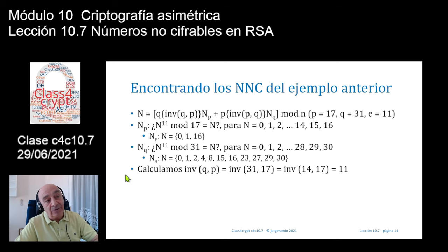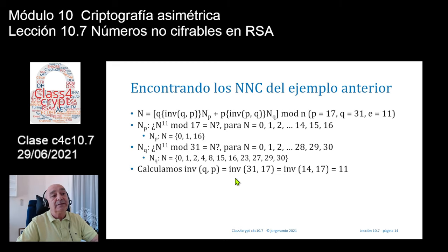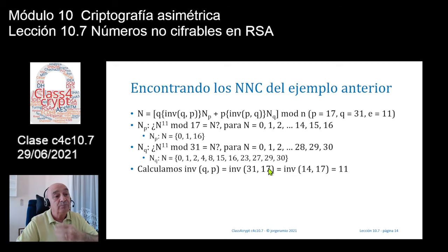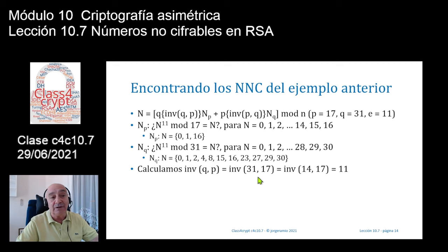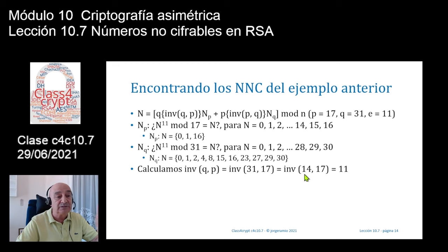¿Qué debo hacer? Debo encontrar el inverso de Q en P y el inverso de P en Q. Para encontrar el inverso de Q en P, como Q es mayor que P, debo encontrar el inverso de 31 en módulo 17. Como 31 es mayor, hay que reducirlo primero: 31 módulo 17 = 14. Ahora calculo el inverso de 14 en 17, que me sale el número 11. Ya tengo el inverso de Q en P.